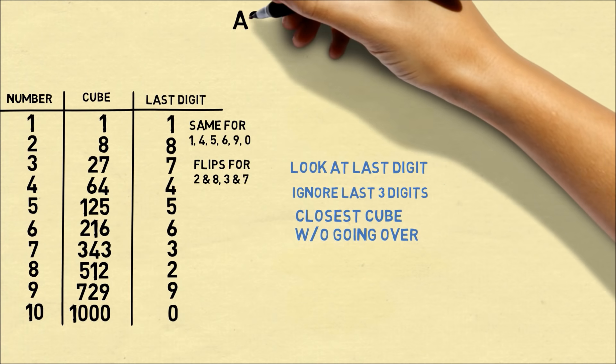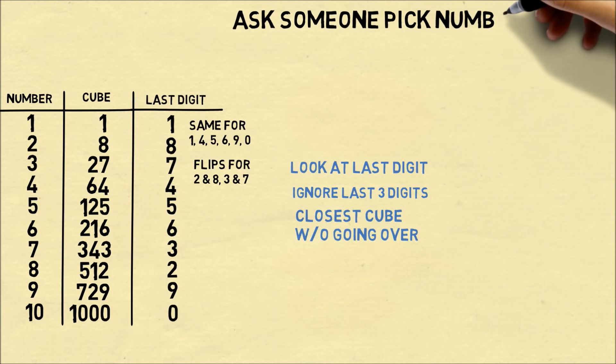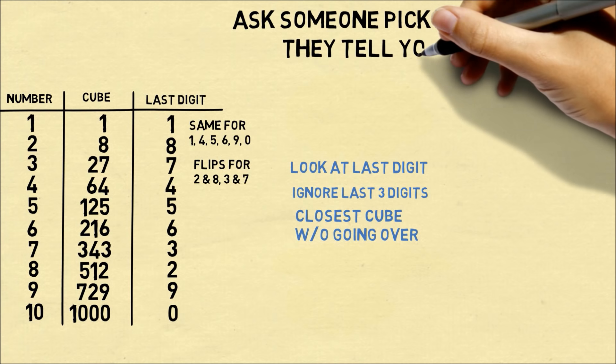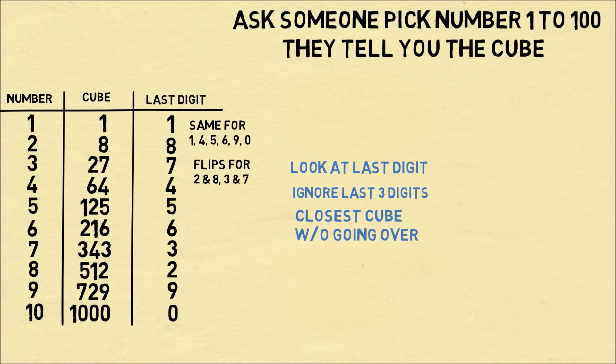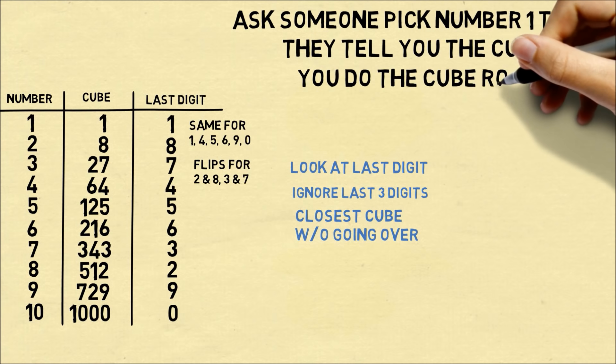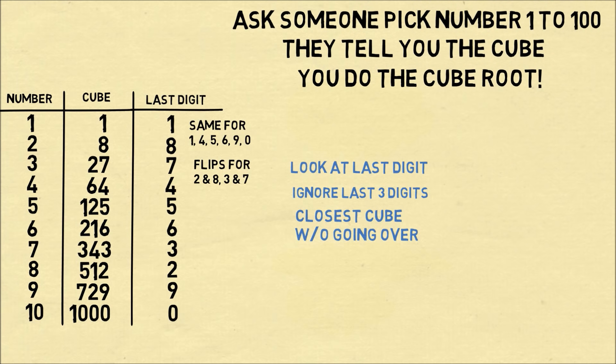So why would this ever be useful? Here's a trick you can do. Ask someone to pick a number from 1 to 100, and just think about it secretly. Don't have them tell you the number. Have them cube the number on a calculator. Once they cube the number, they tell you the cube, and you instantly can tell them the cube root by using this table and the trick.